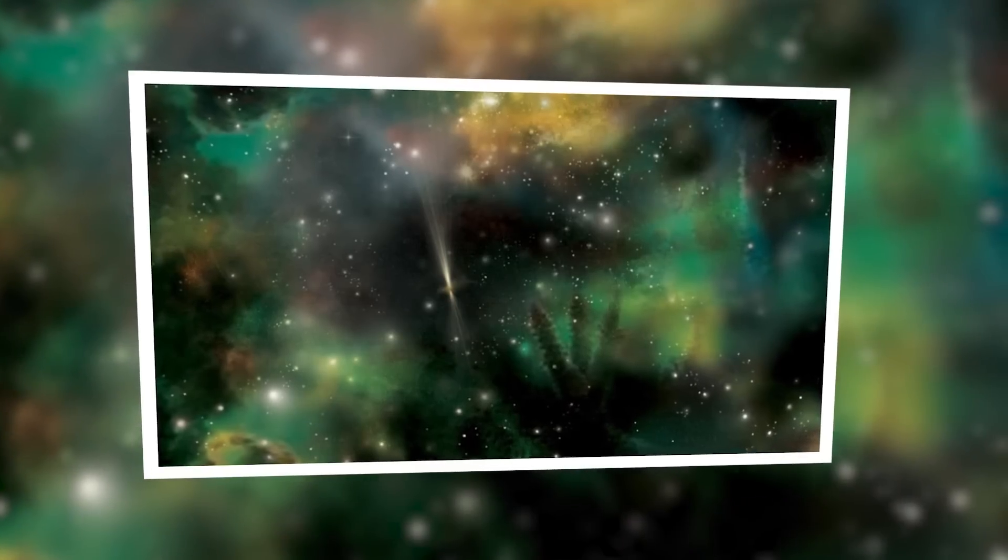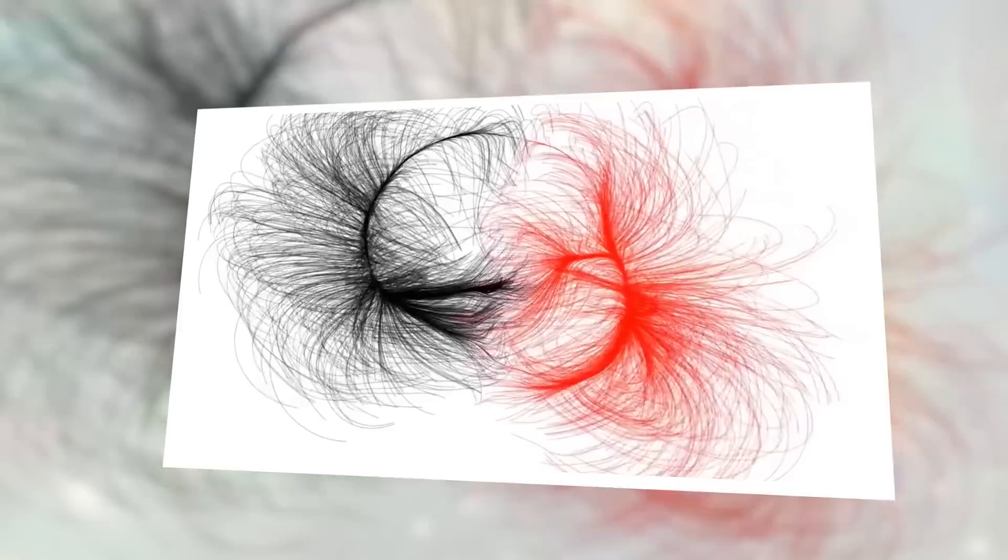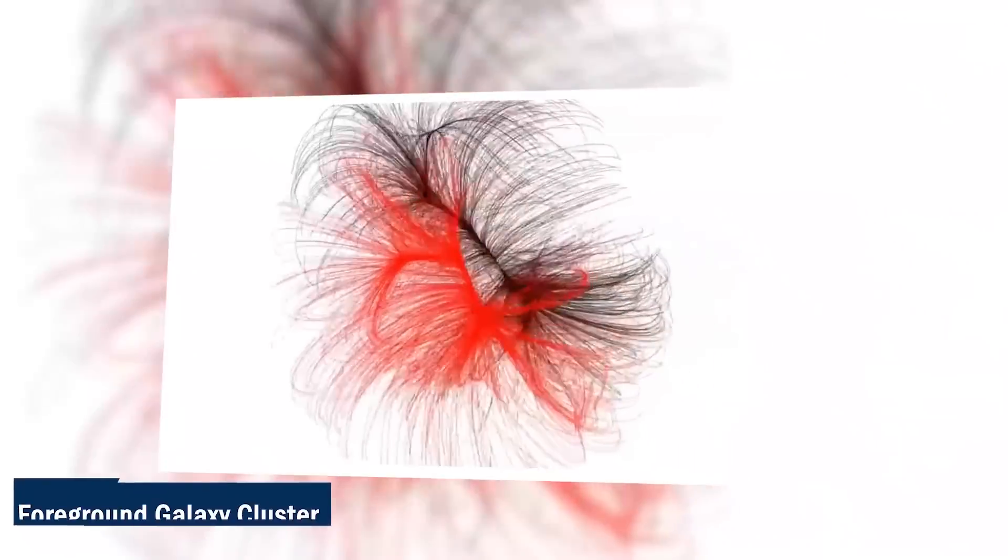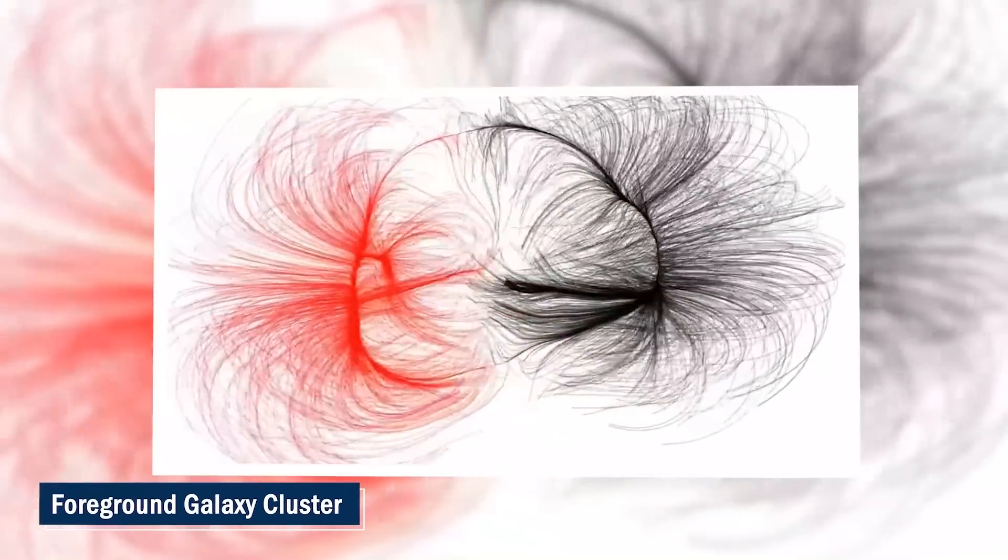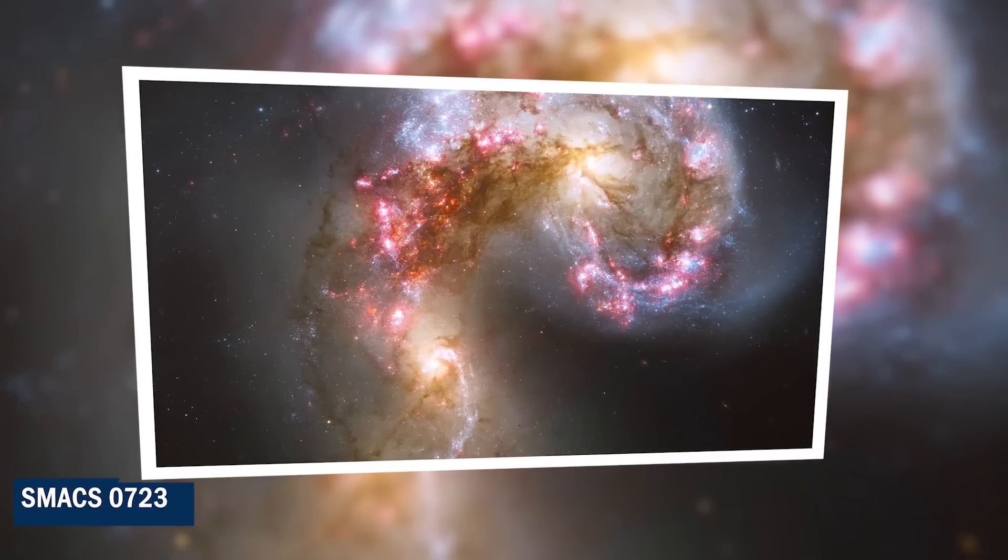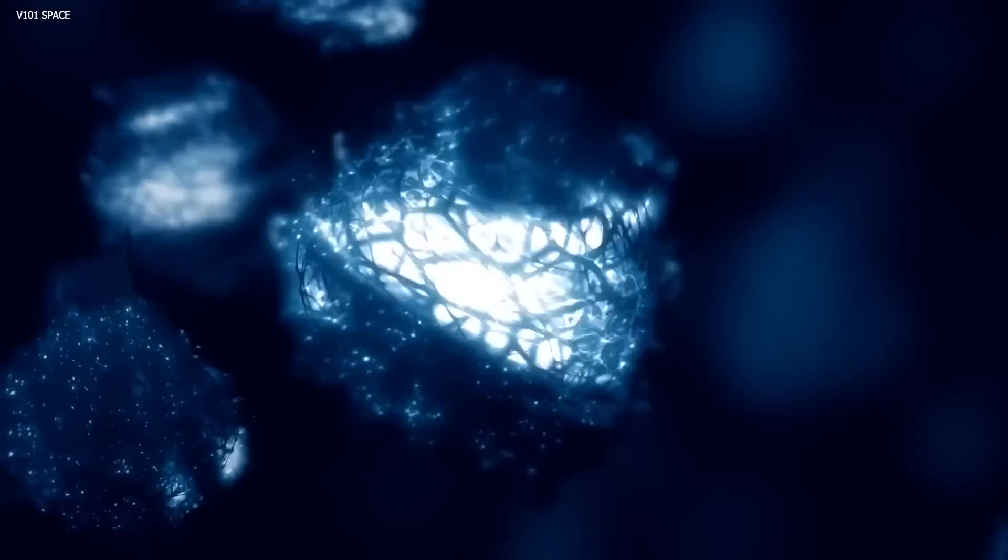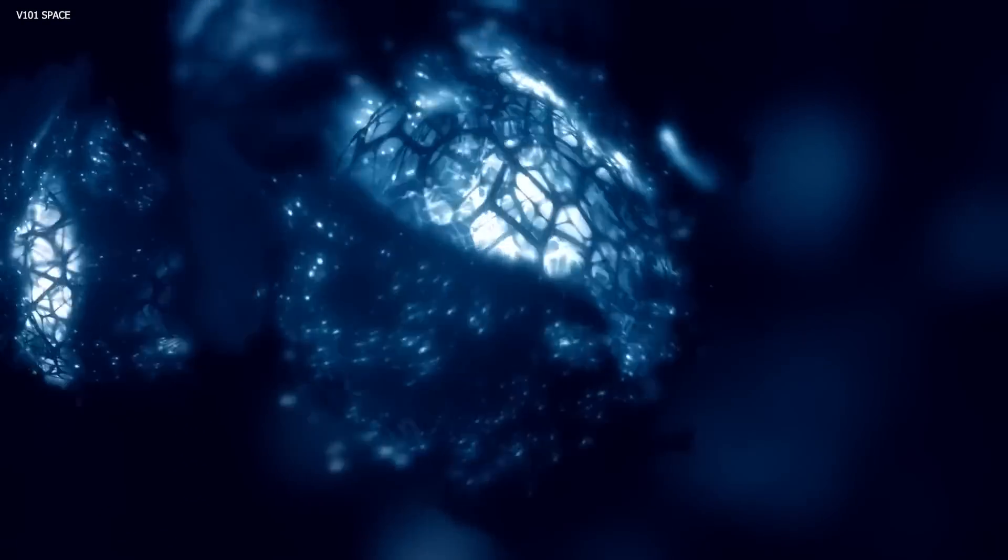The light emitted by these distant galaxies is curved and magnified by the gravitational pull of the foreground galaxy cluster. This lensing effect creates captivating arcs of light.